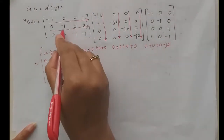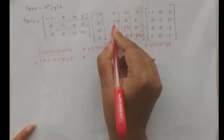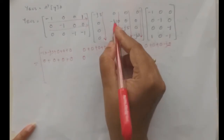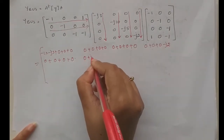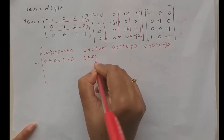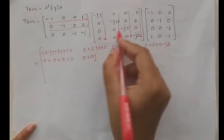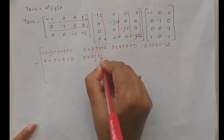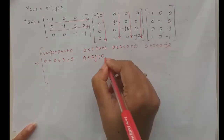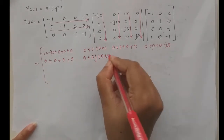Continuing the multiplication: minus one times minus j10 gives plus j10, and zero times zero gives zero. So the result for that entry is plus j10.